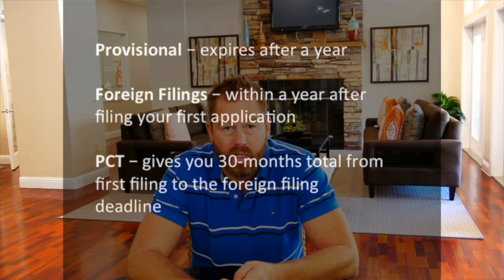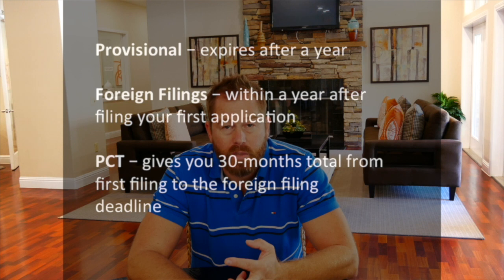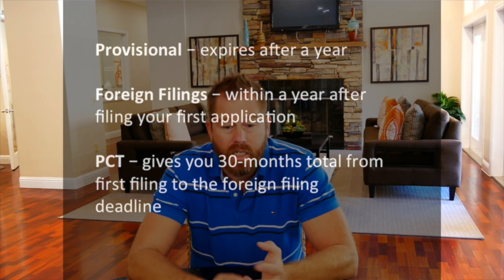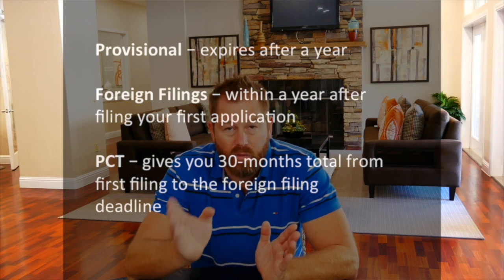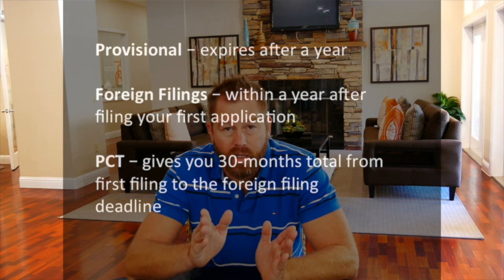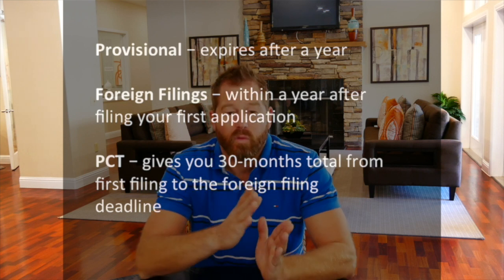You have a one-year period to file internationally. At the one-year mark, you can file the PCT application. PCT is Patent Cooperation Treaty — it is basically a process that facilitates filing into foreign countries, but also gives you a further delay before you have to do that. If you file a normal application like a provisional or non-provisional, you have a one-year period. If you file a PCT application, you have 30 months from the earliest priority date.